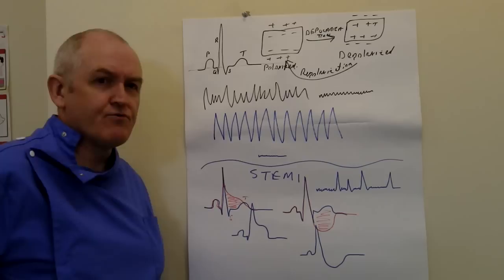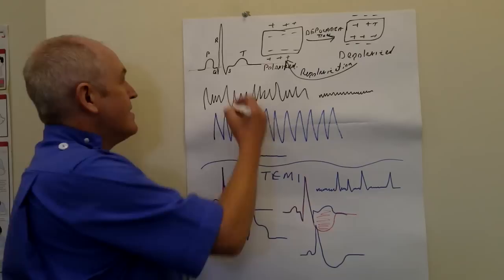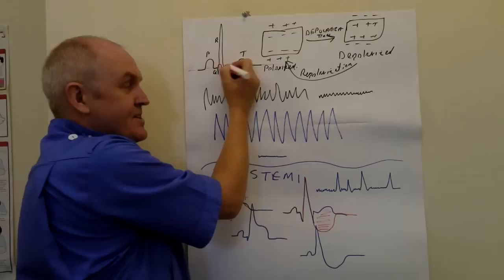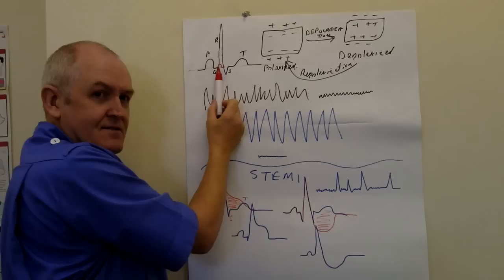You're asking is there atrial repolarisation? The answer is yes, you do get one. But it occurs just here — and you don't see it because the atrial depolarisation is there, the atrial repolarisation is there, but it's hidden. That's the atrial depolarisation, that's the atrial repolarisation.